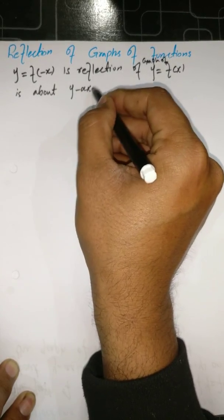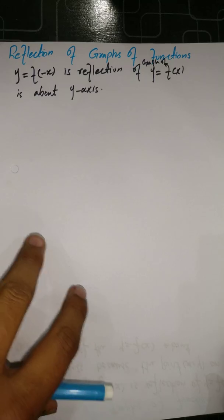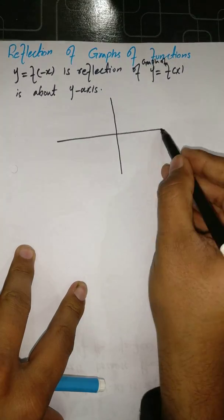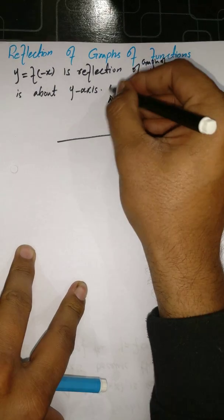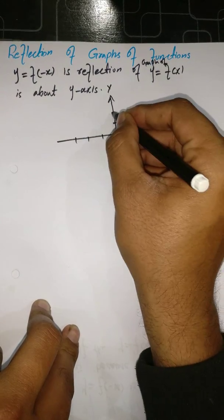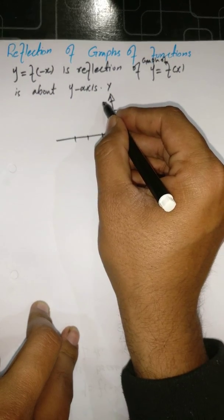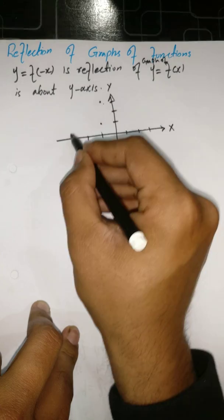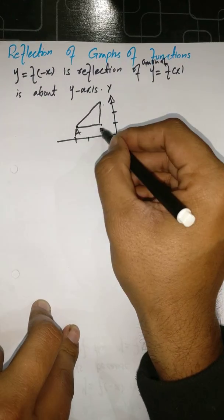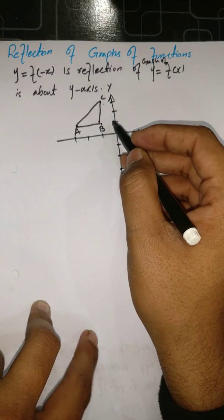This reflection is about the y-axis. To understand this reflection, I will take an example and draw a graph and its reflection. I draw an x-y coordinate plane, label the x-axis and y-axis, mark points 1, 2, 3 on each axis, and draw a triangle at those points — calling it triangle ABC.